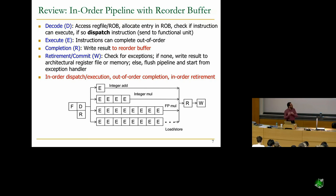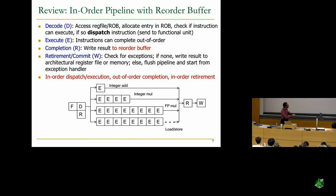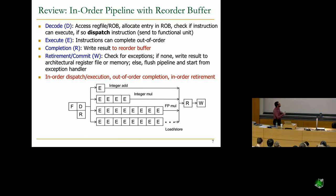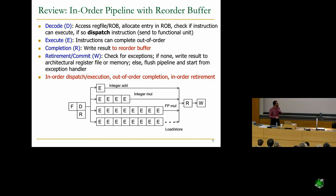If you fetched a branch that you mispredicted, you do essentially the same thing as for an exception. You've fetched all the wrong-path instructions, figured out the branch is wrong, and at the retirement stage you check whether the branch is mispredicted. If it is, you flush the pipeline and restart from the correct target of the branch. Branch mispredictions are handled very similarly to exceptions. Existing machines optimize this a lot more, but that's one way of handling branch mispredictions.